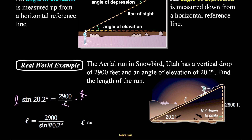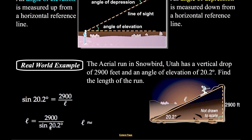To solve for L, multiply both sides by L to get L times sine of 20.2 equals 2,900, then divide both sides by sine of 20.2. So L equals 2,900 divided by the sine of 20.2 degrees. On your calculator, take the sine of 20.2 degrees and divide it into 2,900, and you get approximately 8,398.5 to the nearest tenth.